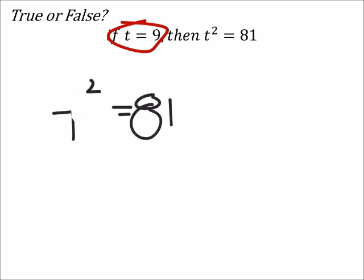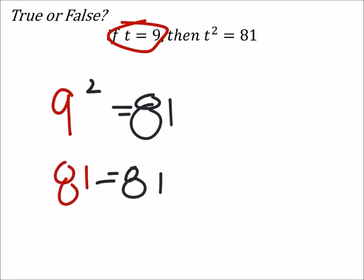So nine squared as it turns out is 81. Does 81 equal 81? I guess I could put a question mark there right, because we didn't know. Well, this is true, which would mean that if we were checking our work we would know that the answer is correct. Right here we're just saying it's true.